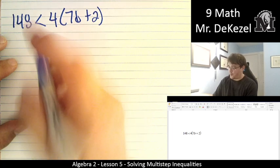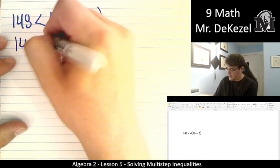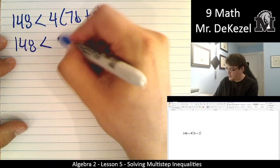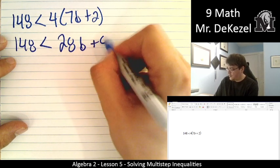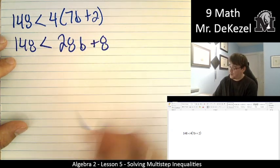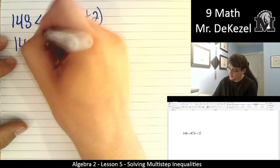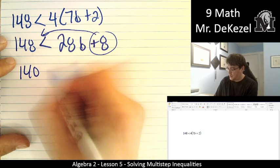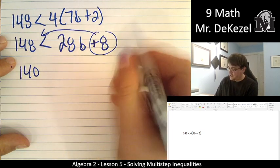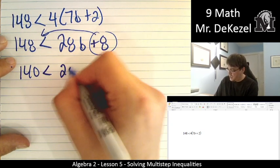Okay, we're going to go ahead and get rid of our brackets. So 148 is less than 4 times 7 is 28b plus 4 times 2. That's 8. We're going to subtract 8 from the other side. So that's 140. 140 minus 8. And then that's less than 28b.